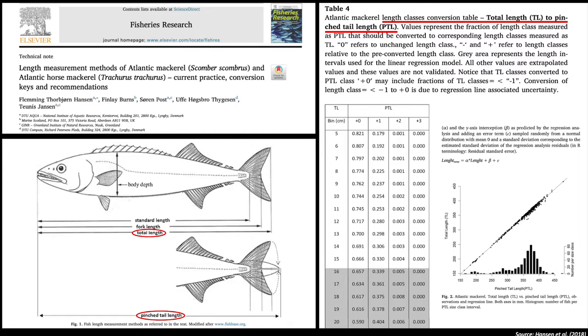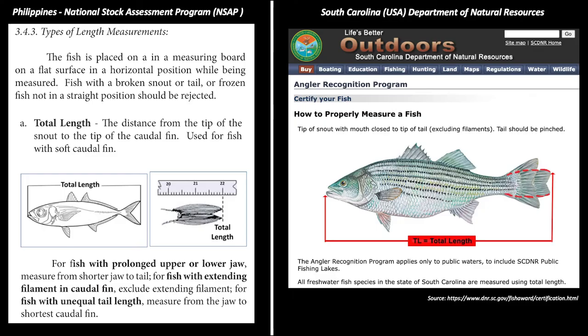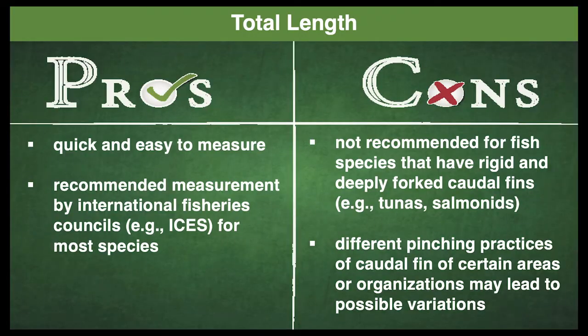Conversion tables have also been developed to resolve this, but it may be better to measure both dimensions if only a few samples are being analyzed, such as in taxonomic studies, or choose the method used by your scientific community and government agencies when dealing with numerous samples. In most cases, total length is frequently chosen because it is quick and easy to measure. International fisheries councils and commissions like ICES recommend total length as a dimension to be measured for all species, except for tunas and salmonids that have a rigid and deeply forked caudal fin. For these species, fork length is always preferred.